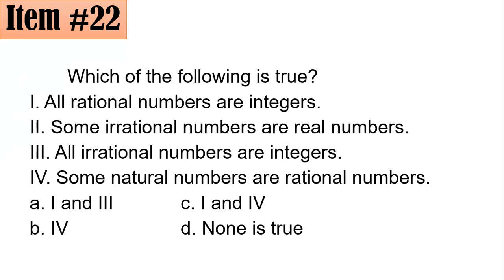How about the second one? Some irrational numbers are real numbers - this is false as well. How come? It should be all irrational numbers are real numbers. For the third one, all irrational numbers are integers - this is also false. In fact, there is no such thing as an irrational number that is an integer. Integers are rational numbers and irrational numbers and rational numbers have no intersection.